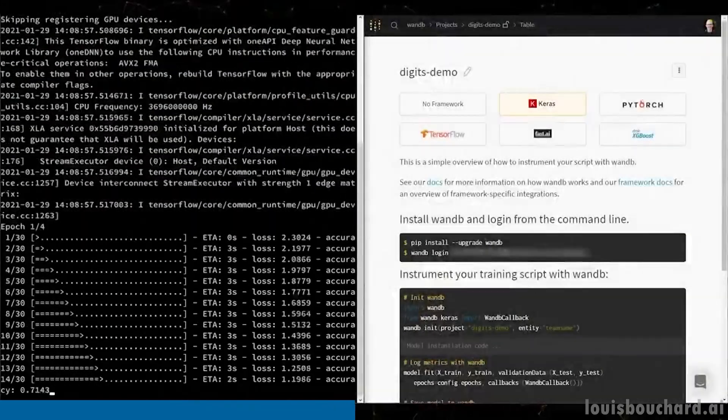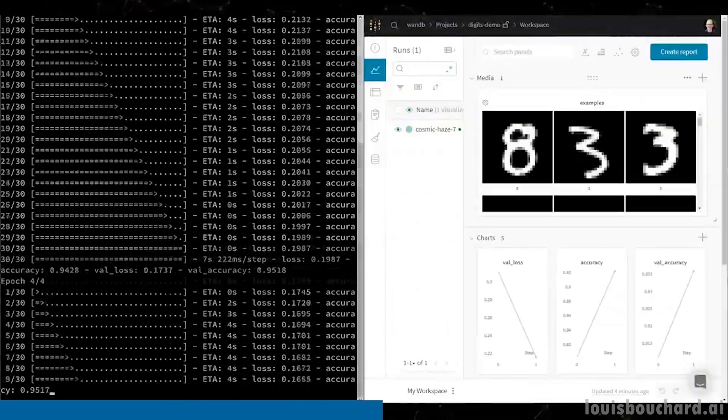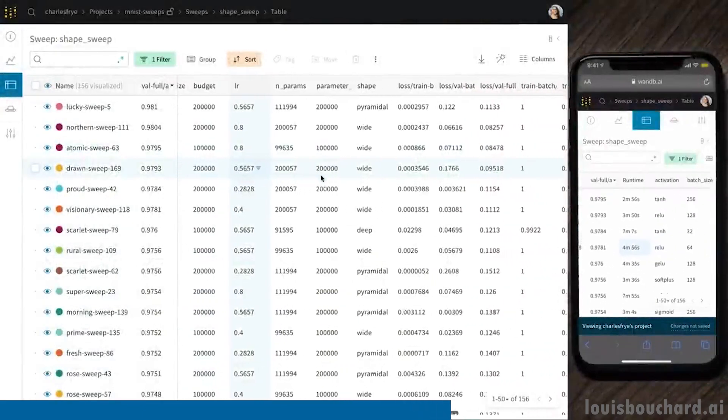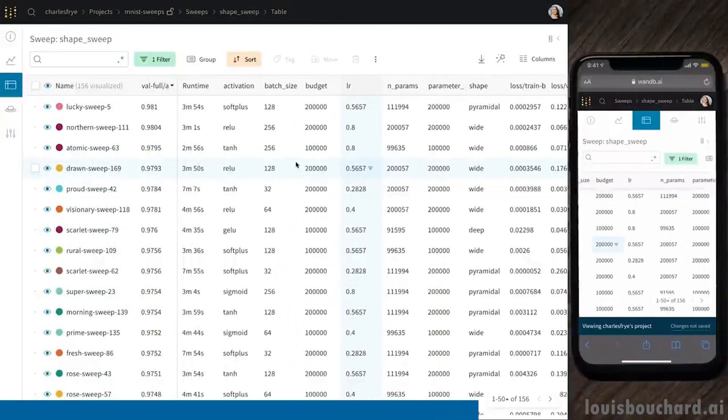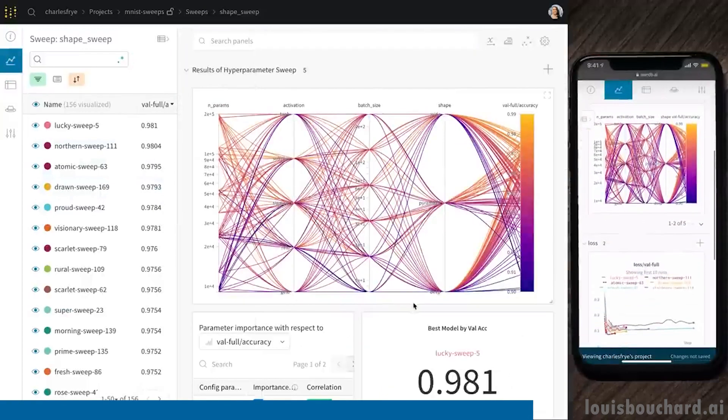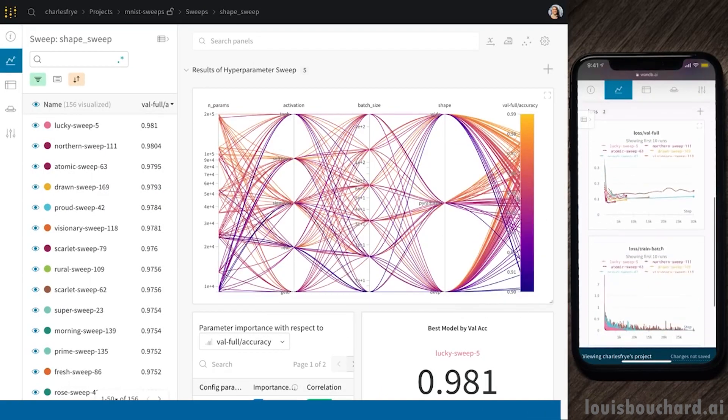Then, you can easily create your own workspace using filters, groups and your own panels to display anything you need to analyze. How can you not be well organized with such a tool? It basically contains everything you need for your code to be reproducible without you even trying.